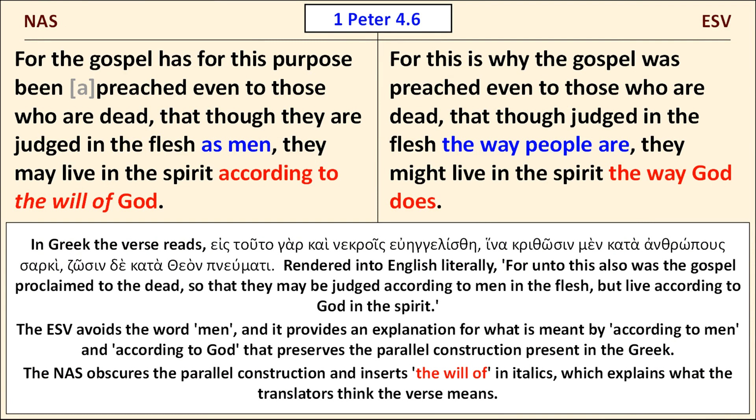Let's take a look at the end of the verse, since the two translations differ there. A literal translation would read: For unto this also was the gospel proclaimed to the dead, so that they may be judged according to men in the flesh, but live according to God in the spirit. The ESV avoids the word men and provides an explanation for what is meant by according to men and according to God that preserves the parallel construction present in the Greek. The NAS obscures the parallel construction and inserts the will of in italics. With the ESV, the reader can't know how interpretive the translation is unless consulting the Greek, other translations, or a good commentary.